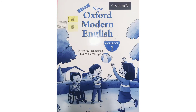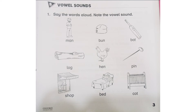Now take out your English workbook. Open your workbook to page number three, Exercise B — vowel sounds. Say the words aloud and note the vowel sound. Look at page number three — there are pictures with their names. We have to find out the vowel sound, recognize it in the word, underline it, and then circle it.